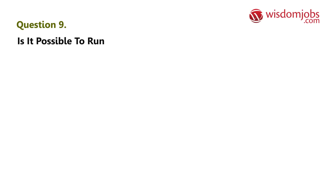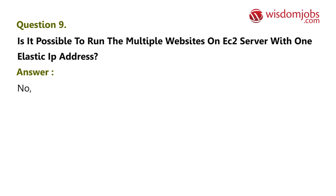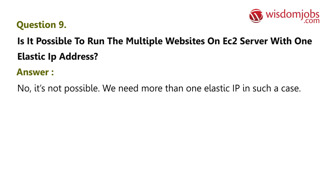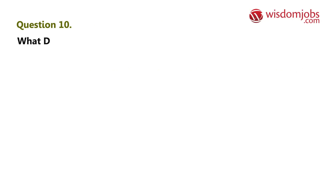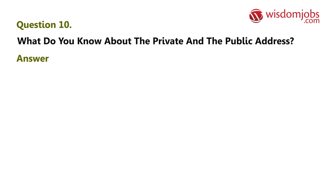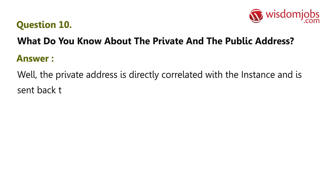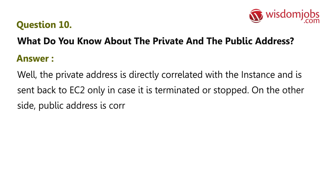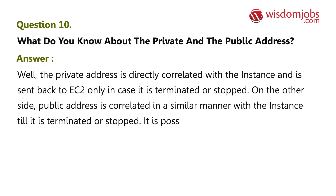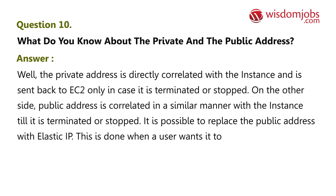Question 9: Is it possible to run multiple websites on an EC2 server with one Elastic IP address? Answer: No, it's not possible. We need more than one Elastic IP in such a case. Question 10: What do you know about private and public addresses? Answer: The private address is directly correlated with the instance and is returned to EC2 only if the instance is terminated or stopped. The public address is correlated with the instance until it is terminated or stopped, and it is possible to replace the public address with an Elastic IP when a user wants it to stay with the instance.